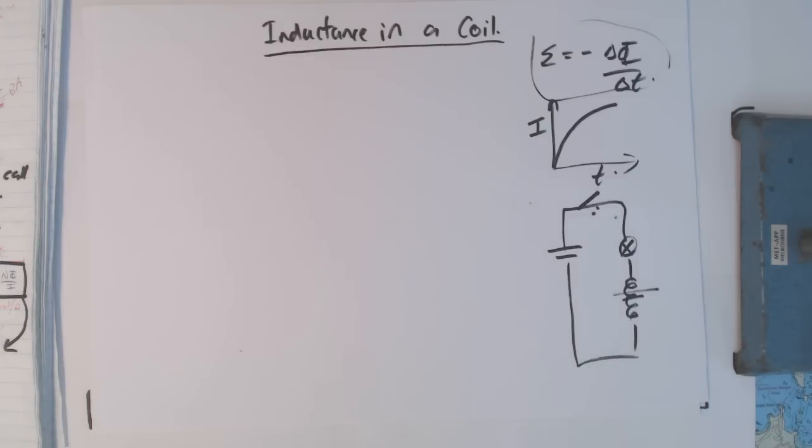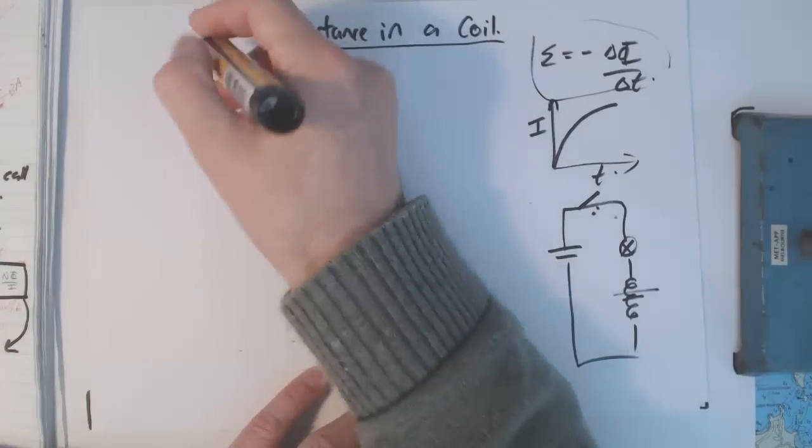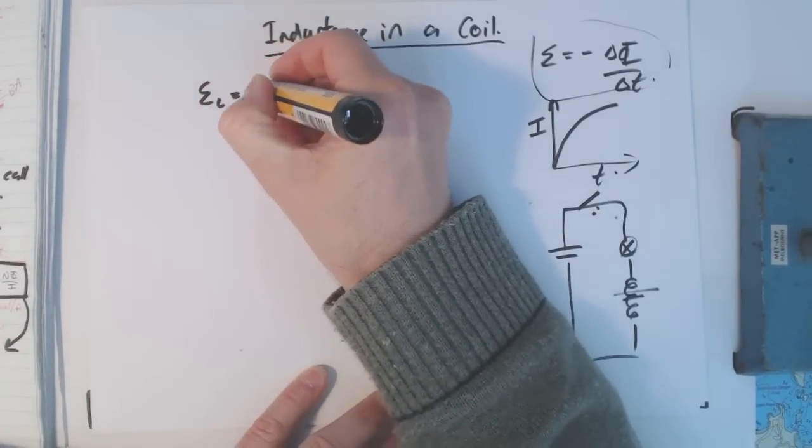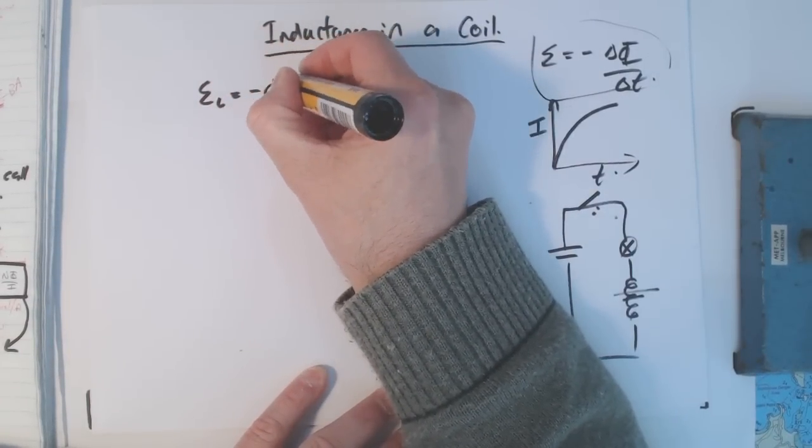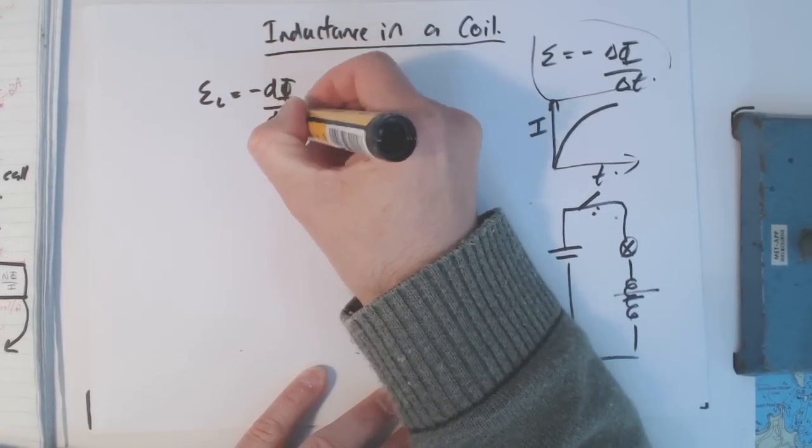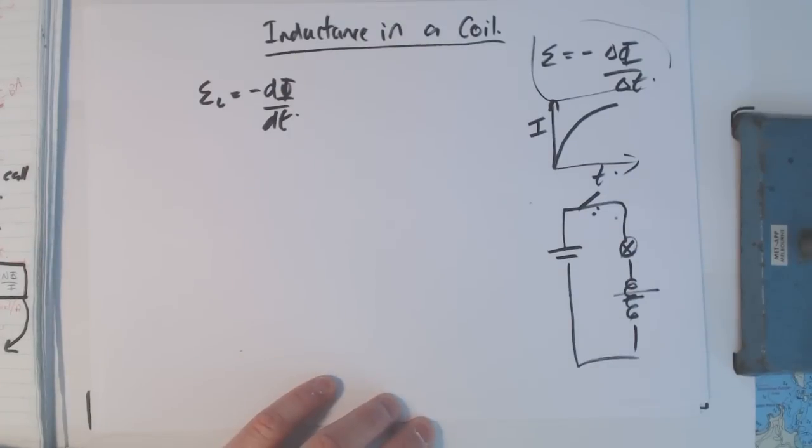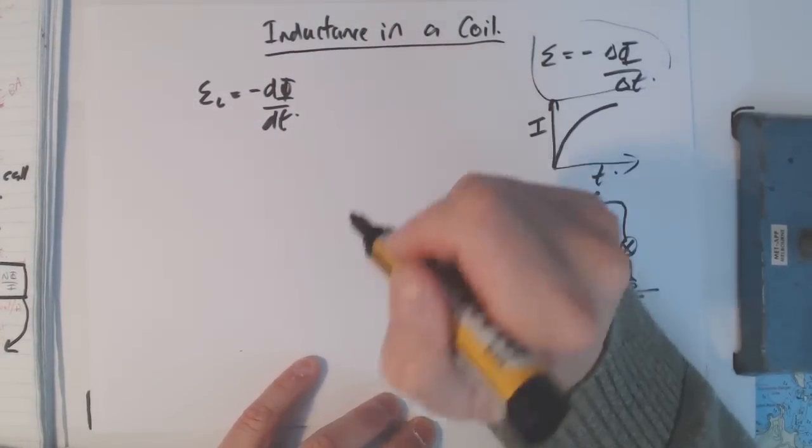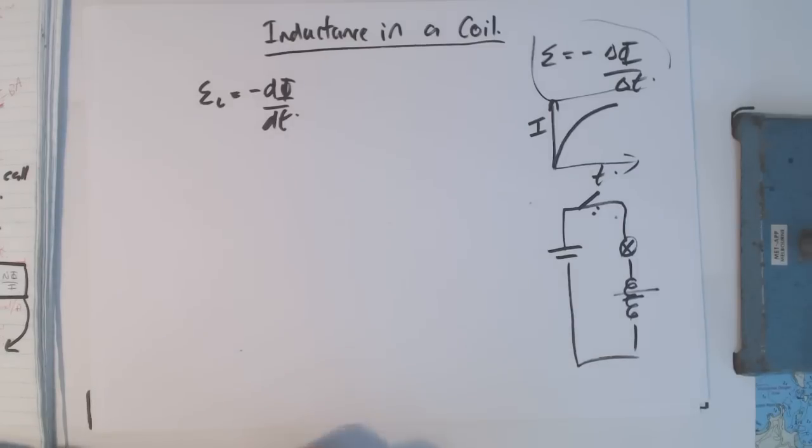When you build a coil, it's like a capacitor—it has a set ability to do this, related to the construction and number of turns. We can use that to figure out how much voltage it will produce. We don't just use ε = -dΦ/dt. We know that the change in flux in a coil or solenoid is related to the current.